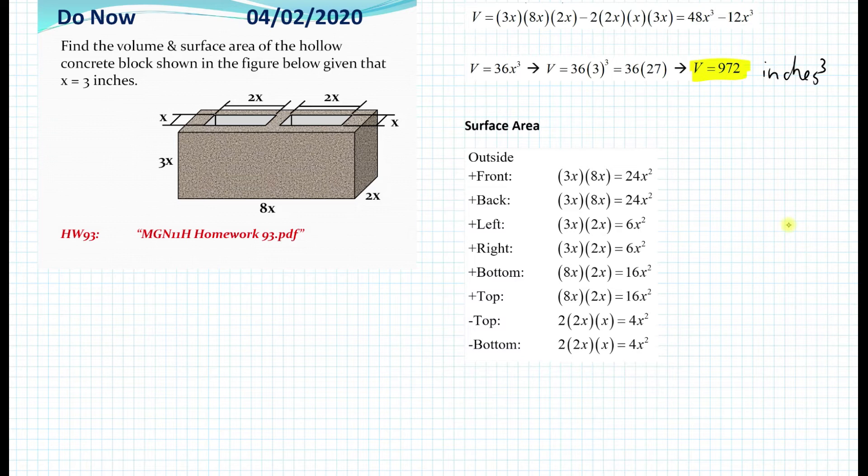So now the bottom part without the hollow part is 8x times 2x equal to 16x squared. And then we also have a top part of 8x times 2x equal to 16x squared. So they're basically the same. And again, this is imagining as if there's no hollow part at all.